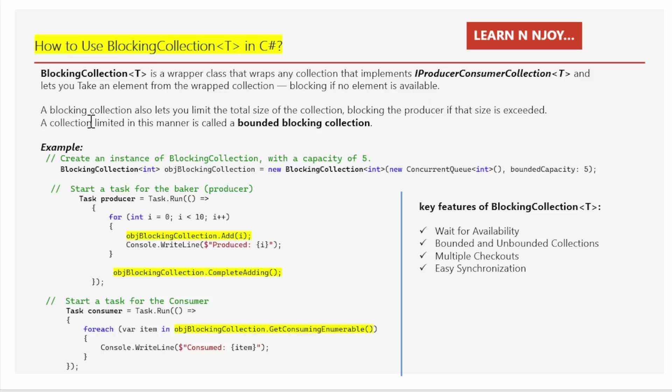A BlockingCollection also lets you limit the total size of the collection, blocking the producer if that size is exceeded. A collection limited in this manner is called a Bounded Blocking Collection. Let's try to understand this with the help of examples.